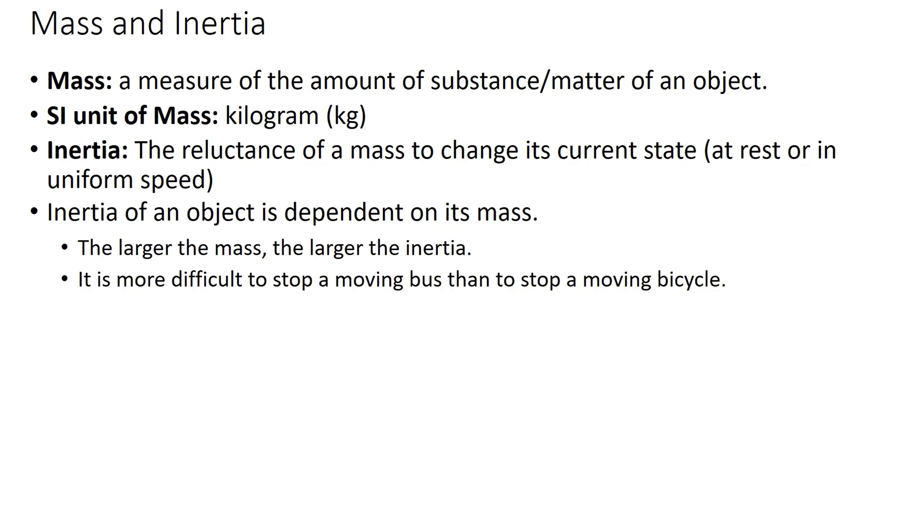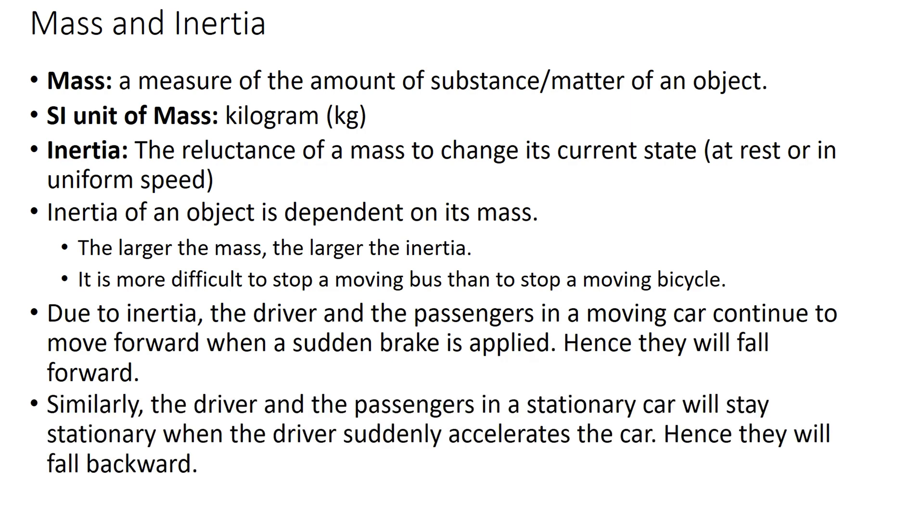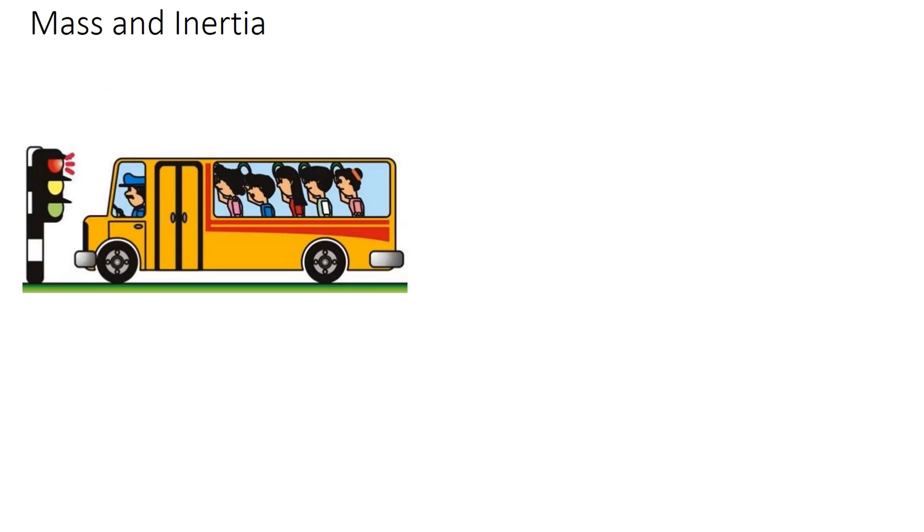It is more difficult to stop a moving bus than to stop a moving bicycle. Due to inertia, the driver and passengers in a moving car continue to move forward when a sudden brake is applied, hence they will fall forward. Similarly, the driver and passengers in a stationary car will stay stationary when the driver suddenly accelerates the car, hence they will fall backward. This bus suddenly stops. The passengers continue to move to the front, hence they fall to the front.